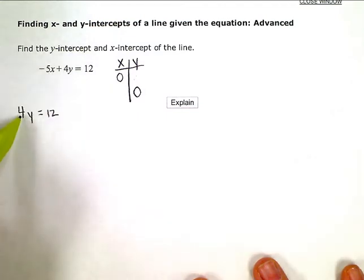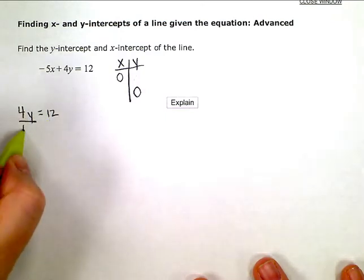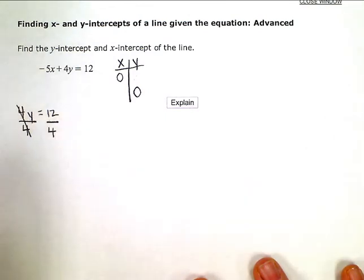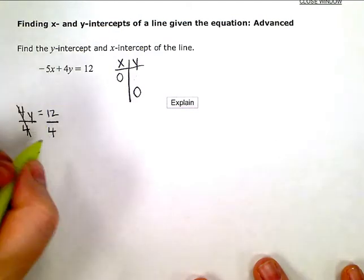If you can do this in your head, right? 4 times what number will give you 12? Or, you can just do a little one-step solve here. Divide out your coefficient and y is equal to 12 divided by 4 or 3.